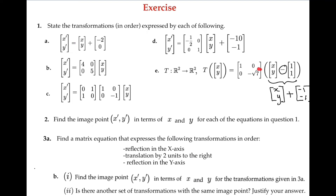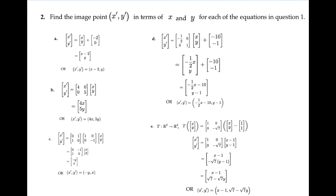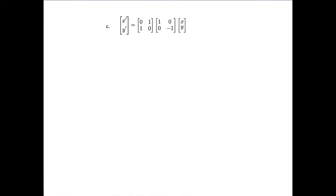The image points for question 2 could be obtained by combining the given matrices or by considering the effect of each transformation in order on the original point. For example, another way to do part C is to take the original point, apply the reflection in the x-axis, and then apply the reflection in the line y equals x.